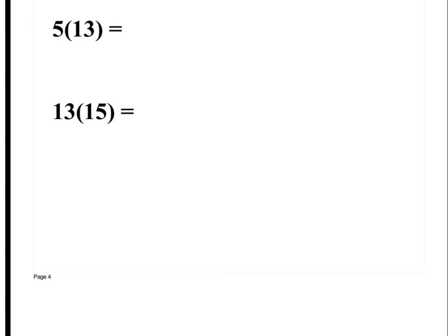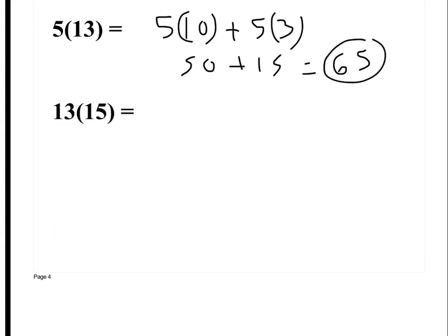Some of your problems might say find the product mentally. If you know what 5 times 13 is, then write it down. But if you don't know in your head, you should do it like this. 5 times 10 plus 5 times 3. 50 plus 15 is 65. Now 5 times 13, that's easy. We should all know it's 65.